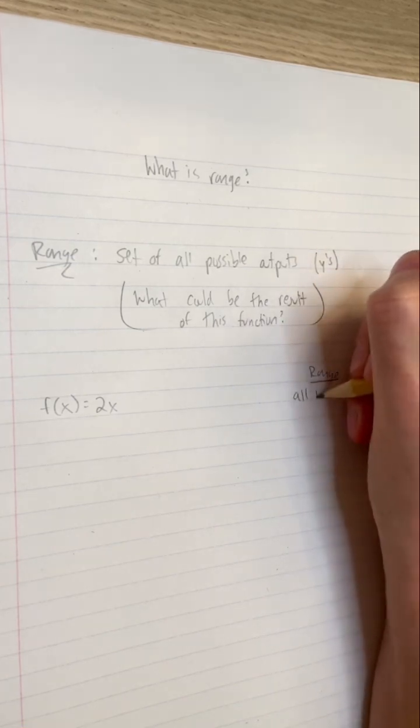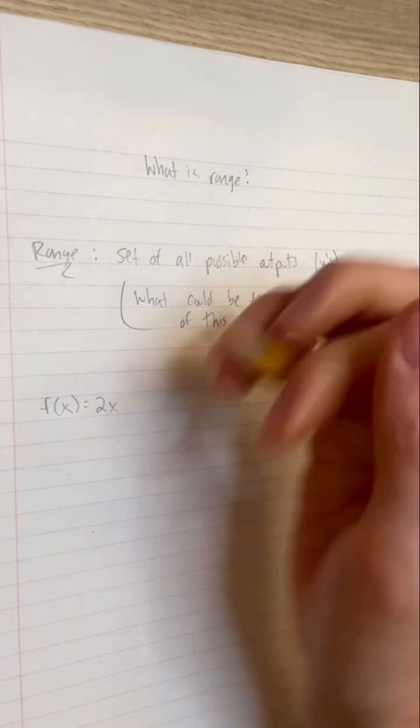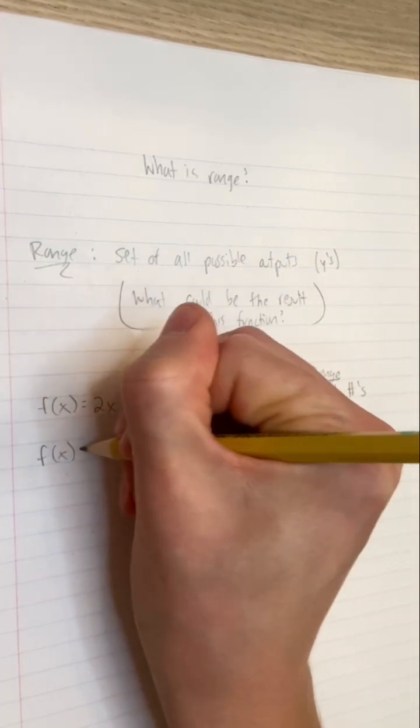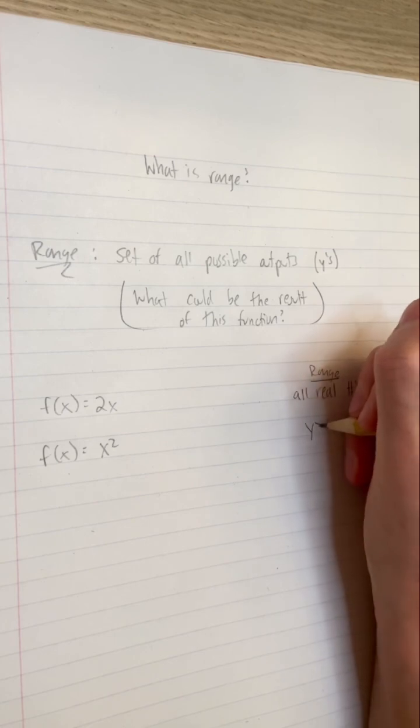If f equals x squared, the range of f is all numbers greater than or equal to 0, because squaring a real number, positive or negative, will have a positive result.